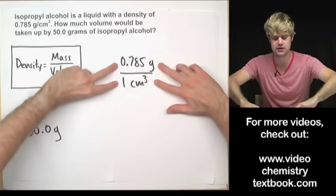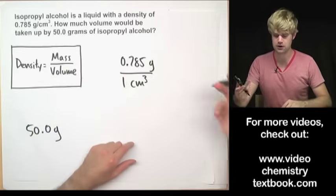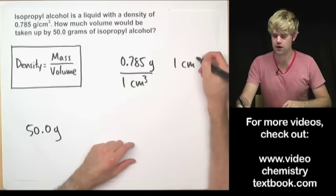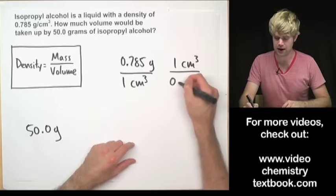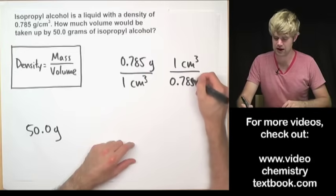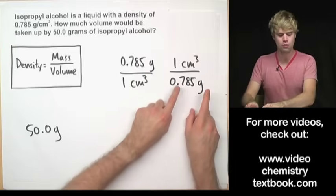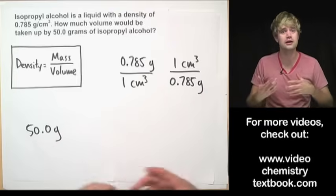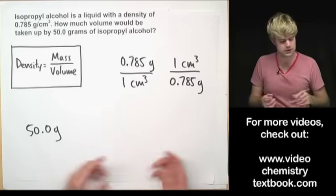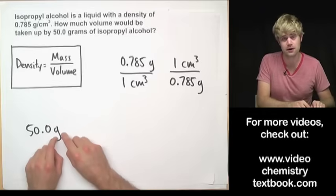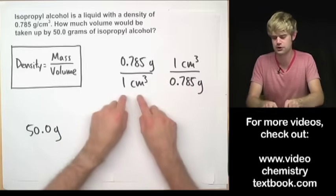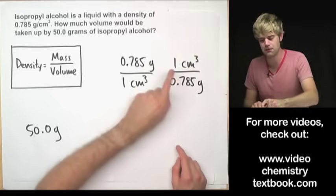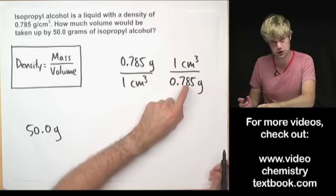The other valid conversion factor is to take this and flip it. So I'll do one cubic centimeter divided by 0.785 grams. Which of these do I want to use? I want to use the one that's going to cancel out grams from here and leave me with cubic centimeters. So since grams is going to be on the top here, I want to choose the version that has grams on the bottom. So it's going to be this version of the conversion factor that I'm going to use.